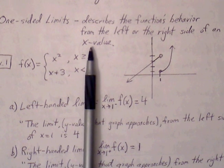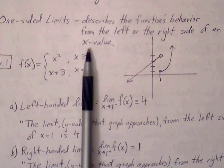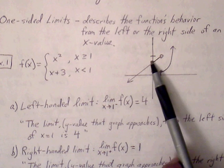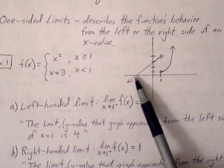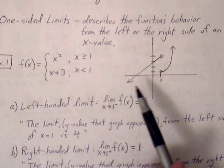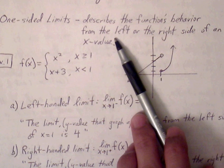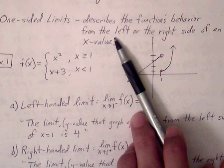We've talked about limits, and in order for a limit to exist, both branches leading up to the target x value have to arrive at the same y value. However, for one-sided limits, we're only going to be looking at or considering the behavior of one of the branches at a time.